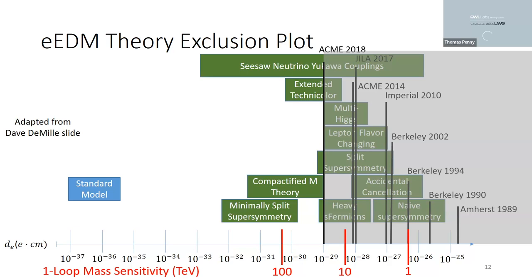Is there a meaning to how high the bars are on the plot? They're just proportional to the predicted range of EDM values for a given theory.